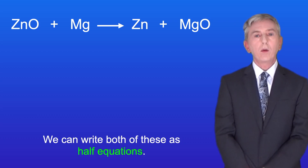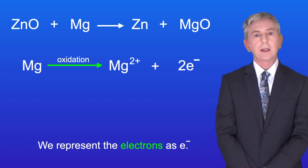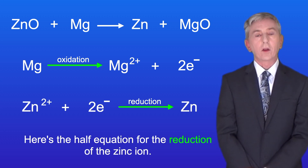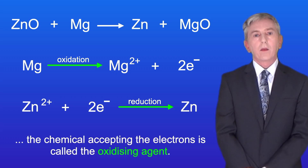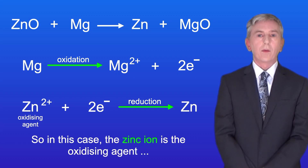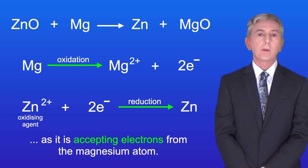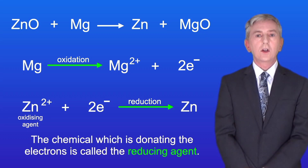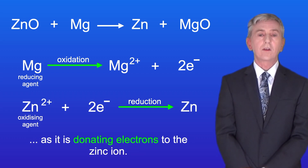Now we can write both of these as half equations. Here's the half equation for the oxidation of the magnesium atom, and we represent the electrons as e minus. Here's the half equation for the reduction of the zinc ion. Now in any redox reaction, the chemical accepting the electrons is called the oxidising agent. So in this case, the zinc ion is the oxidising agent, as it's accepting electrons from the magnesium atom. The chemical which is donating the electrons is called the reducing agent. So here, the magnesium atom is the reducing agent, as it's donating electrons to the zinc ion.